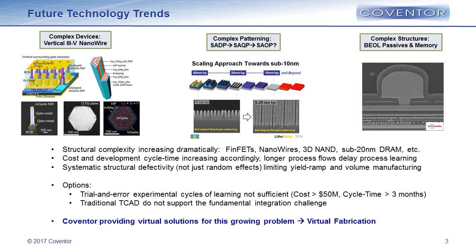If you look at future and even current technology trends, we're seeing a tremendous amount of structural complexity. People talk about vertical devices, III-V devices, and even nanowire devices — I actually found vertical III-V nanowire devices. So structural complexity in transistors and devices is exploding. Patterning technology has gone from single patterning to self-aligned double patterning, quad patterning, and even self-aligned template patterning. Devices are moving from traditional locations to different places in the technology — passive devices moving into the back end of line, and memory devices in the back end as well.